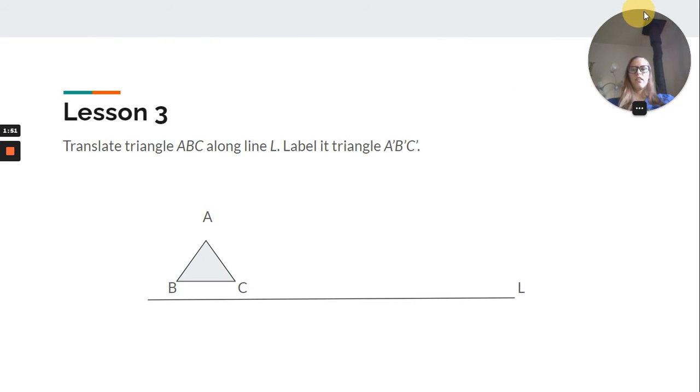Lesson 3, translated shapes. So, translate the triangle ABC along line L. Label it triangle ABC. So, we just moved it. Same size, same shape, just in a different spot.